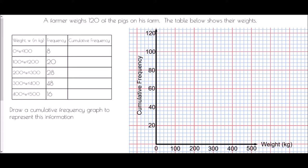It asks us to draw a cumulative frequency graph to represent this information. The first thing we need to deal with is what cumulative frequency actually means. The word cumulative means to accumulate, to build up, and so when we're talking about the frequencies we're keeping a running total as we go through the list. The first cumulative frequency is exactly the same as the frequency — it is eight — but from now onwards we're going to keep adding on as we go down.